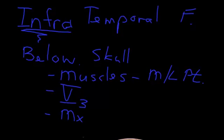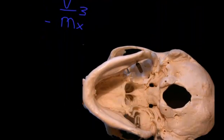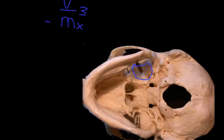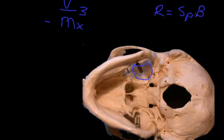Let's have a look at a skull and see where the infratemporal fossa actually is. The skull is upside down here; we can see the palate and foramen magnum. This area at the base of the skull is the greater wing of the sphenoid, so the roof of the infratemporal fossa is the sphenoid bone. If you look very closely, you can see one of the key features we'll talk about later — foramen ovale — sitting in the roof of the infratemporal fossa.